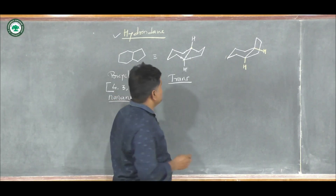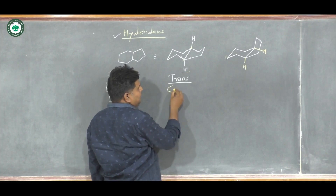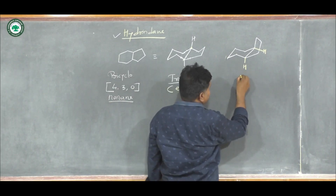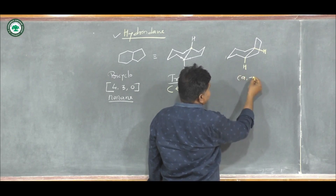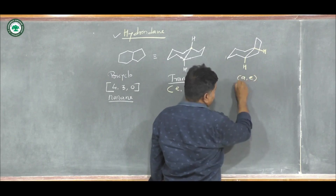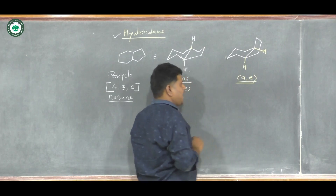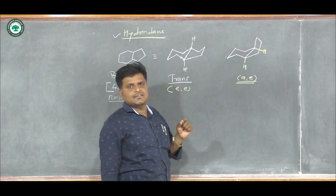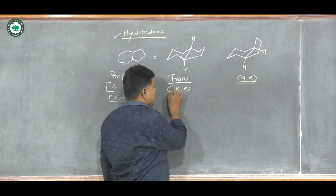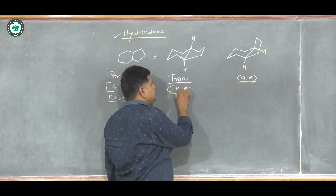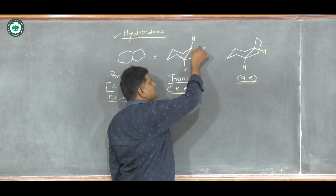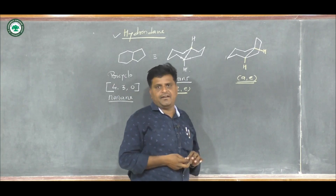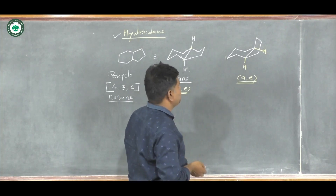In the case of a 1,2-fusion we say: equatorial-equatorial is trans, axial-axial is trans, but axial-equatorial is cis. So in this case the bonds associated with the substituent ring — not the parent ring — determine the cis or trans designation.